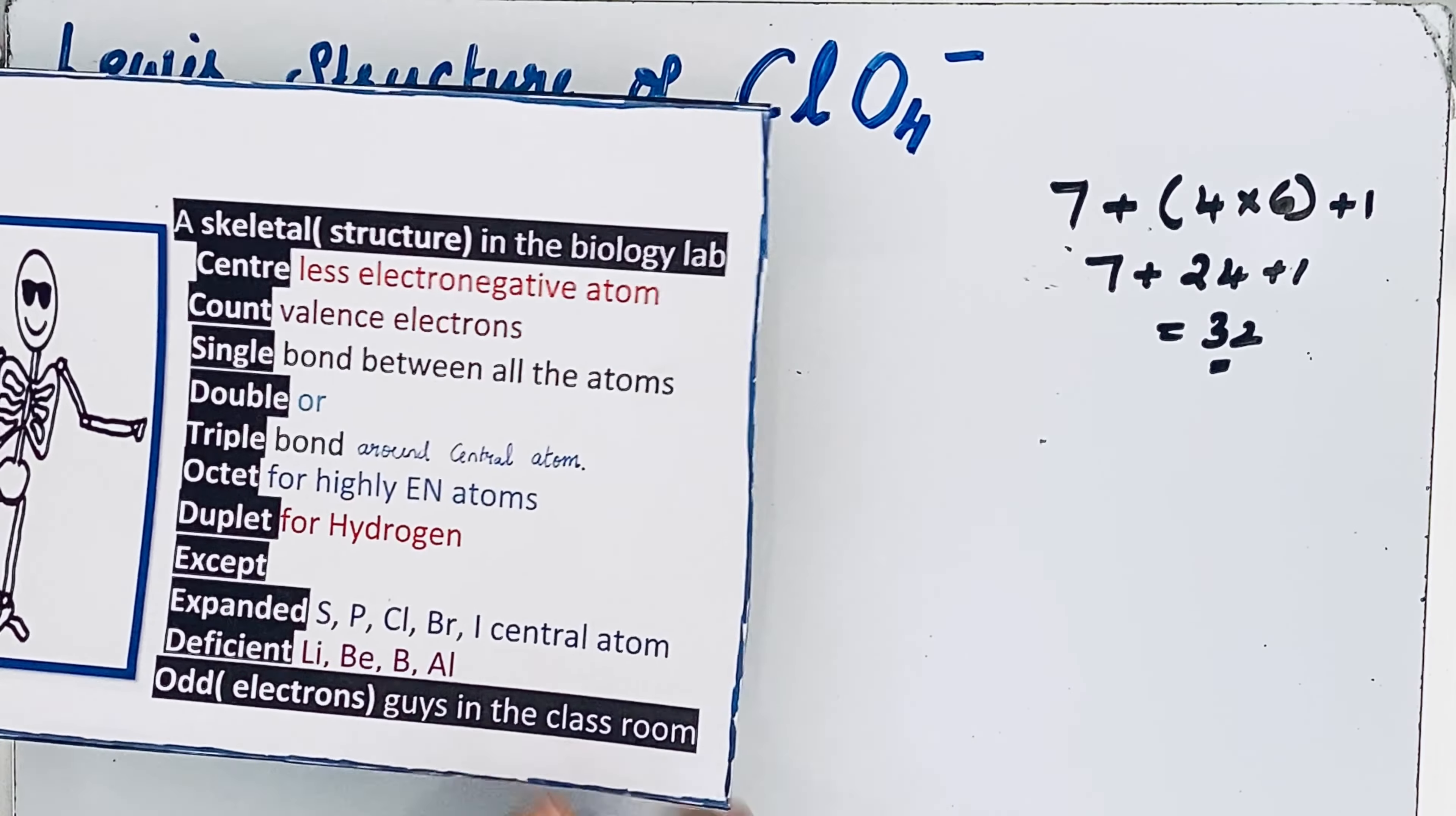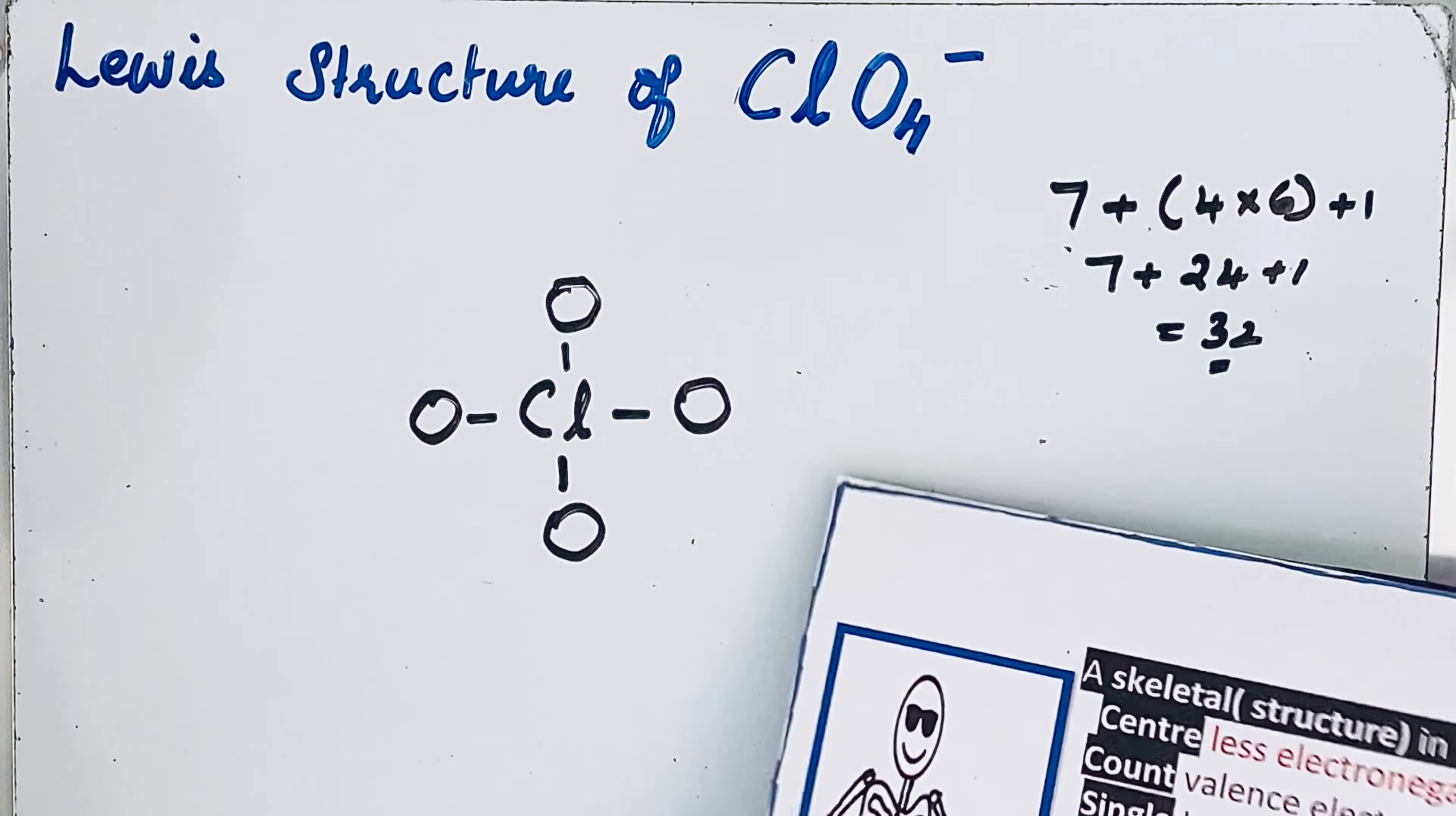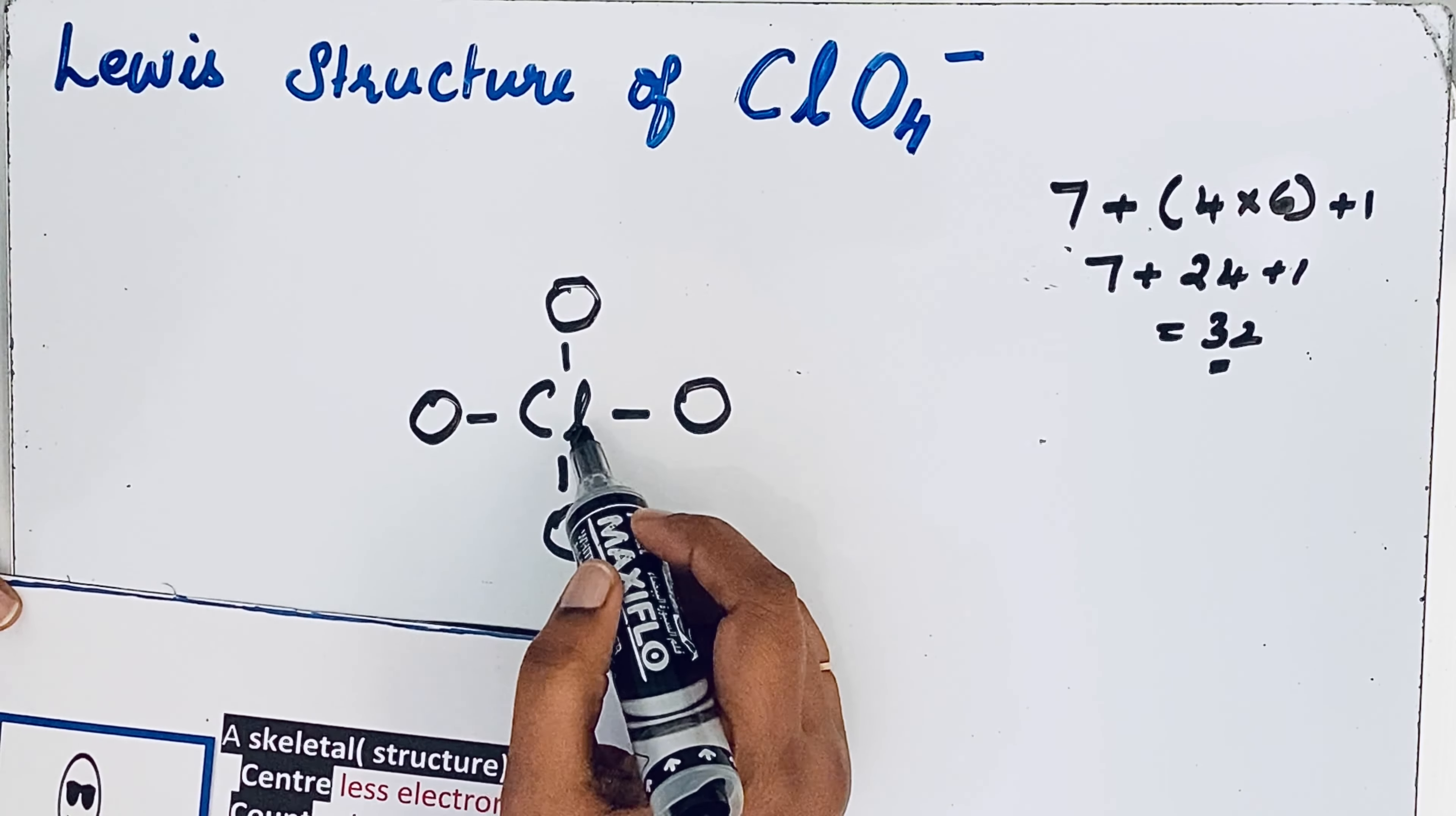Come to the next step. Single bond between all the atoms. Single bond means when two electrons are shared, then we will get that single bond. Then in the next step, double or triple bond around central atom. Why do we put that double or triple bond around central atom? The central atom should get that octet configuration.